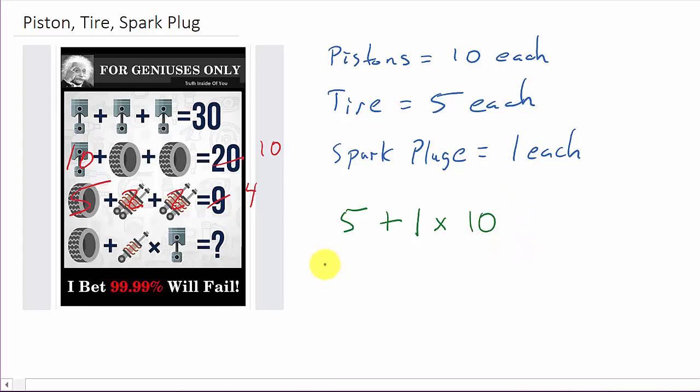All right, so this is going to be 5 plus, and I have to do the multiplication before I do the addition, so 1 times 10 is 10, and then I can add them, and that would give me 15. All right, so that's a way to look at it.